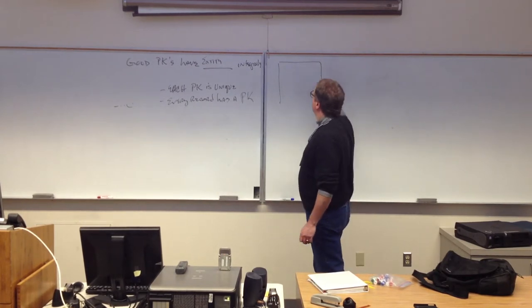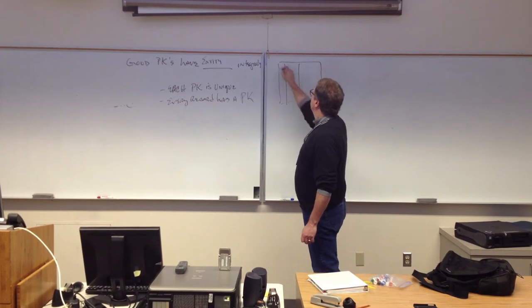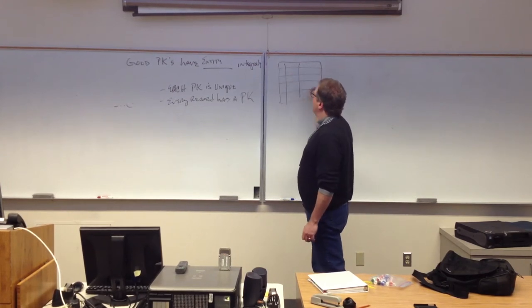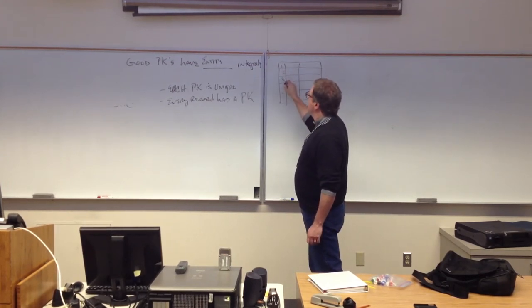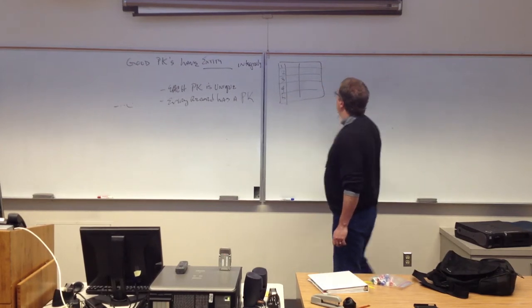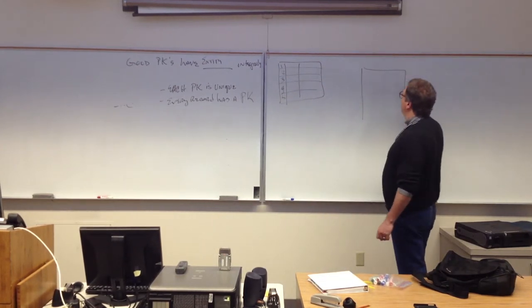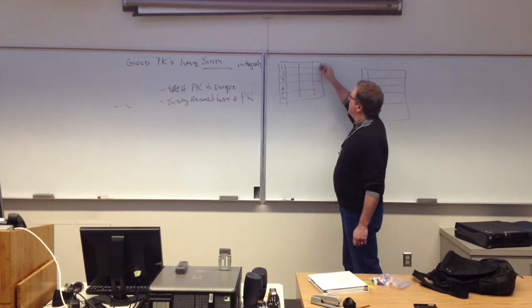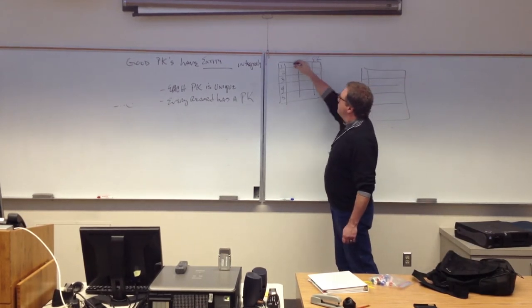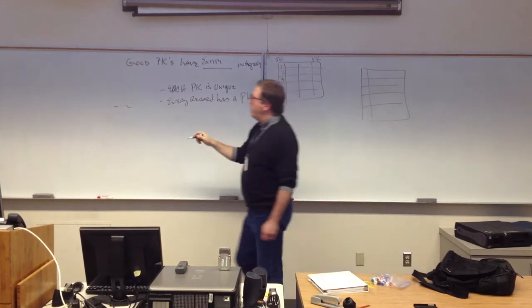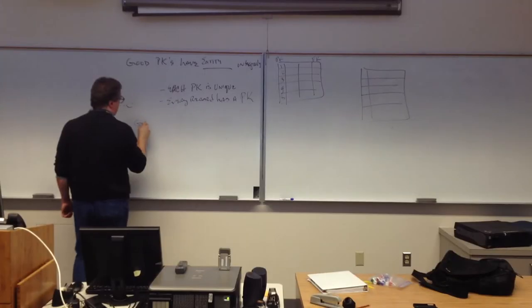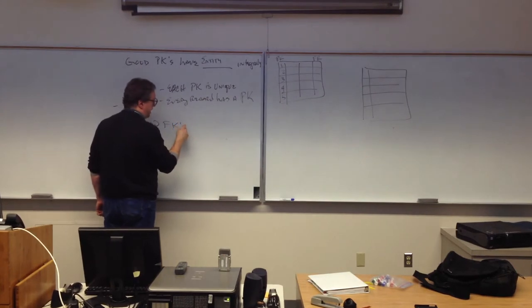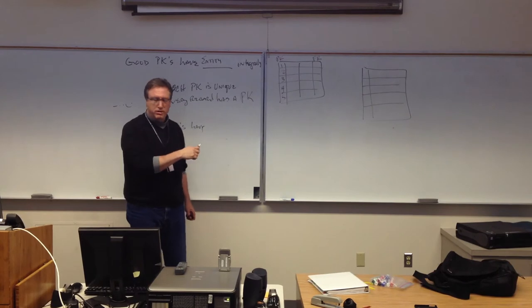If you've got a table, it's got to have entity integrity. It's got to have good primary keys. If it doesn't, stop. Go back to go. Do not collect $200. So that's a table where every record has its own primary key. Now I've got two tables, and this is where referential integrity starts to be important. Now the last column I'm going to have over here is a foreign key of some sort, primary key. Now, good foreign keys have referential integrity.